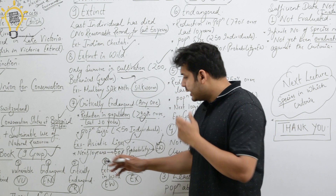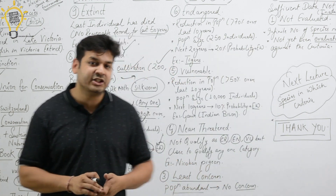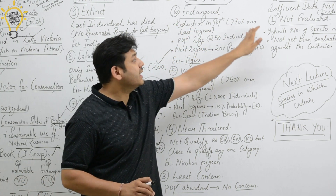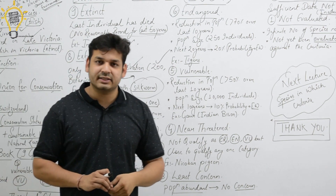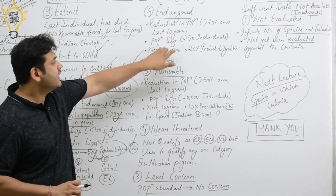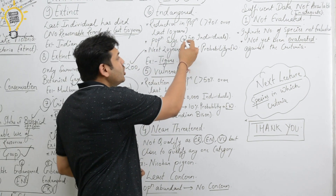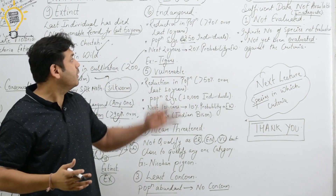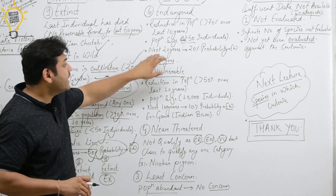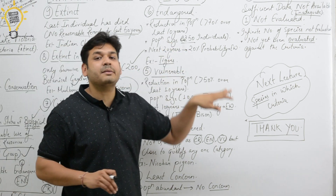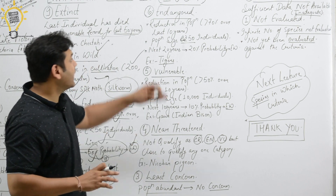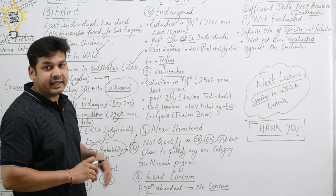The 6th category is Endangered. For Endangered, the criteria are: population reduction of more than 70% over the last 10 years; or population size around less than 250 individuals; or a 20% probability of becoming Extinct in Wild within the next 20 years. Example: Tigers are classified as Endangered.